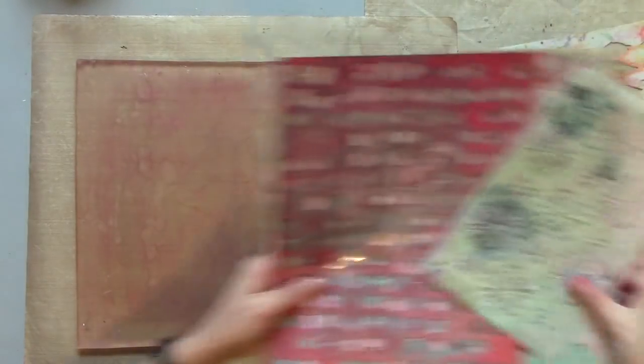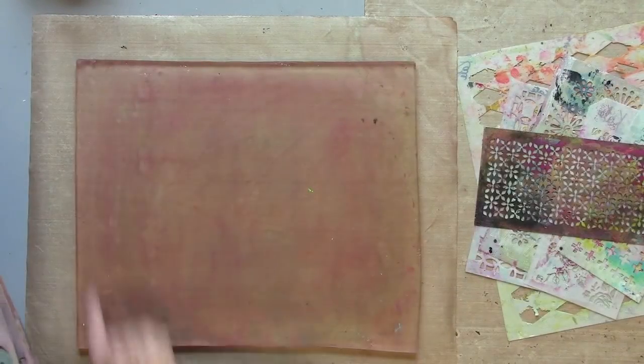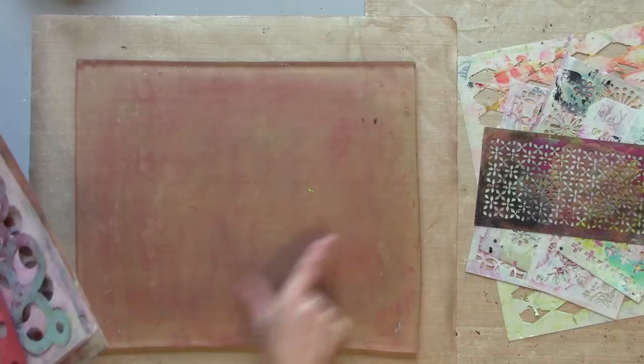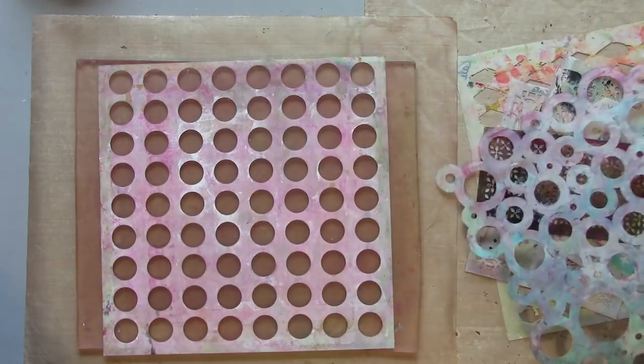I gathered up some stencils. Now for this, we're not going to be using the whole print, we're just going to be using bits of it. So it can be big stencils that kind of cover the whole thing, or it could be smaller stencils.